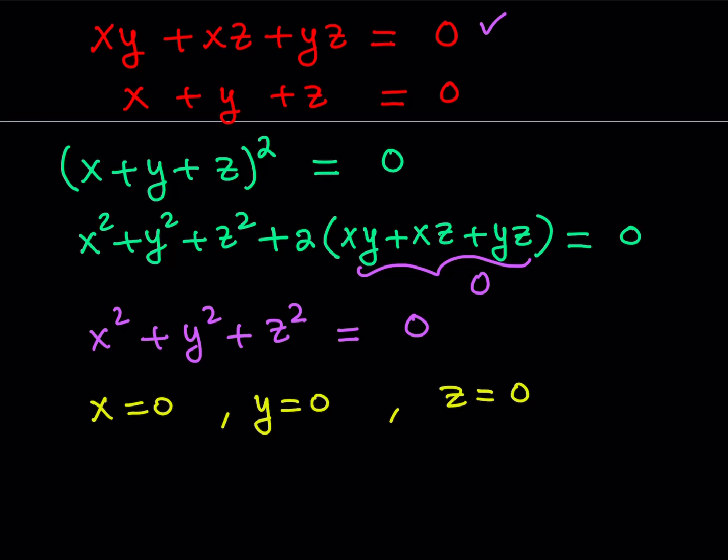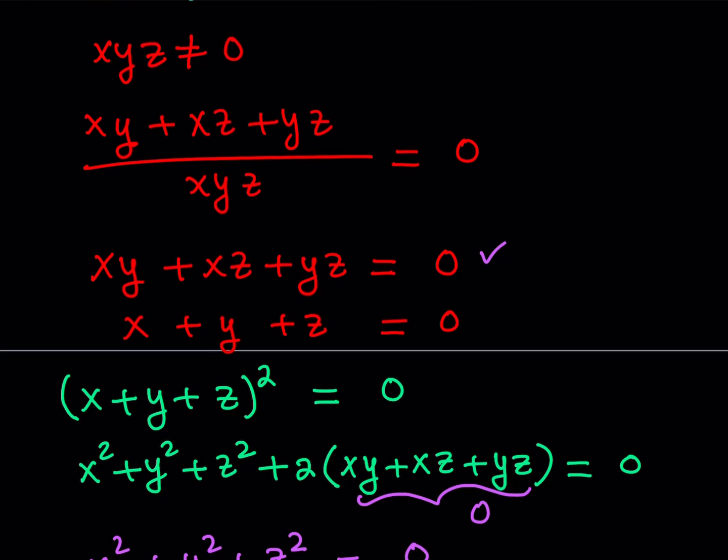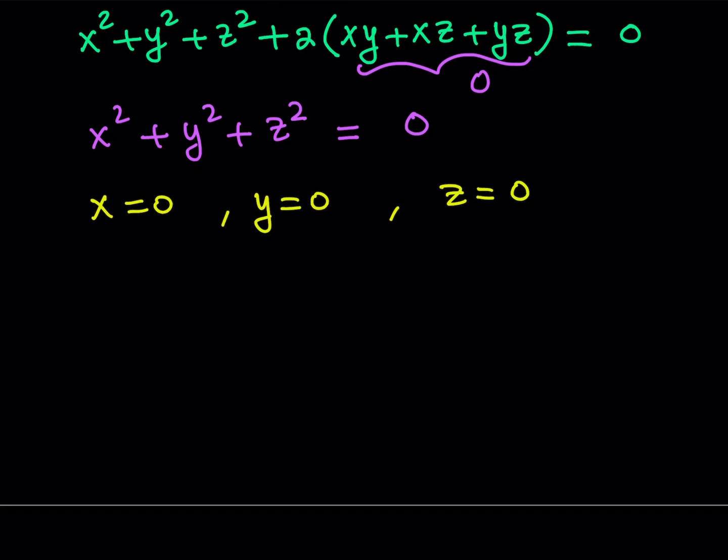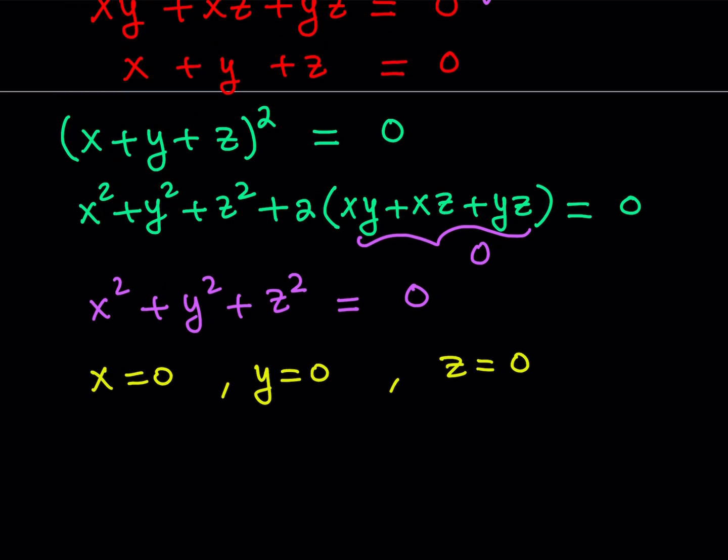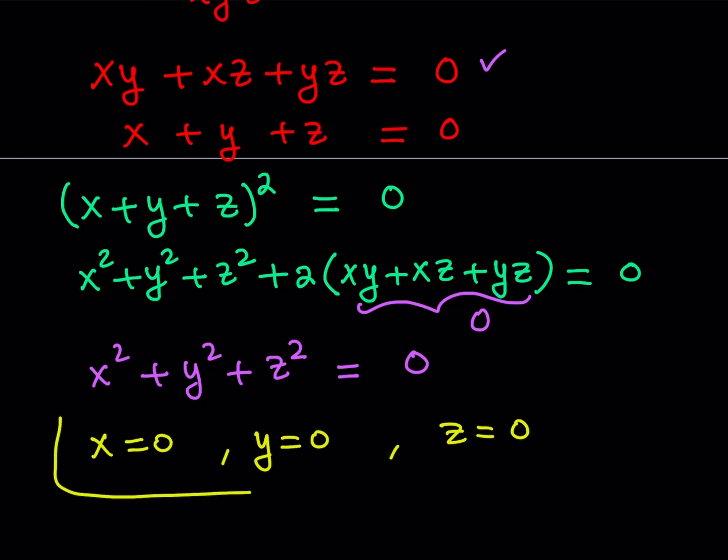But guess what? We had a condition. We had some restrictions. We said that xyz as a product can never equal 0, which means none of these numbers can be 0. But we arrive at the conclusion that they're all 0, but that's a contradiction. This solution here would be fine if we didn't have that restriction, but we do. So what is that supposed to mean? It means that we have no real solutions to this system because it's just not going to work.